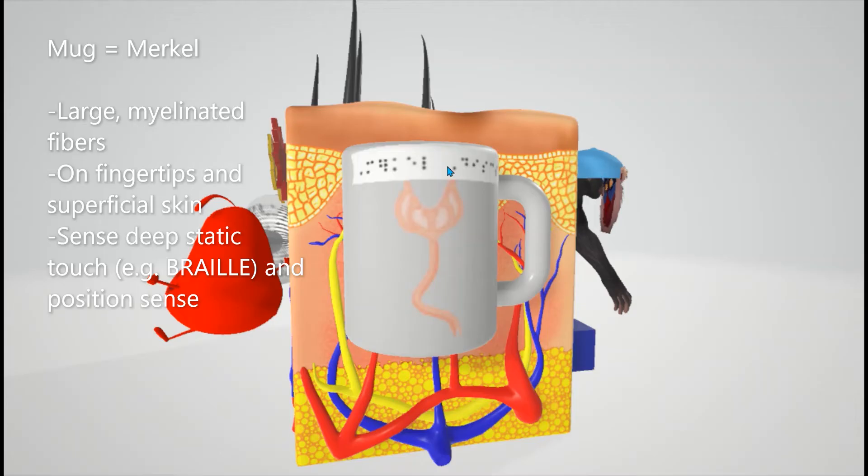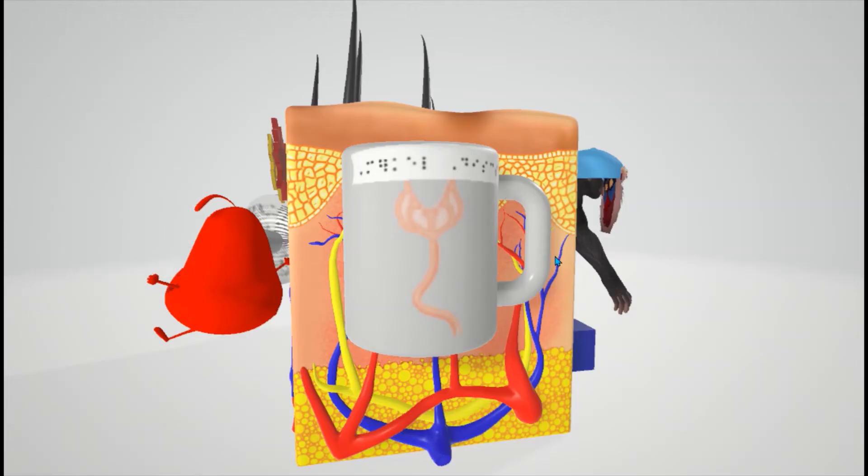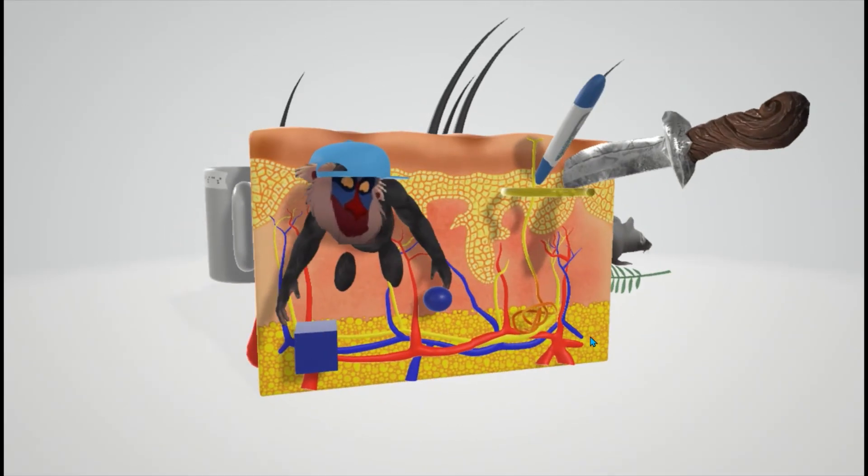To help us remember that braille requires Merkel's discs, because they're for deep static touch, like shapes, edges, braille. It's also involved in position sense and pressure.